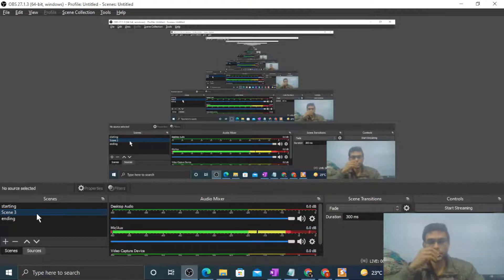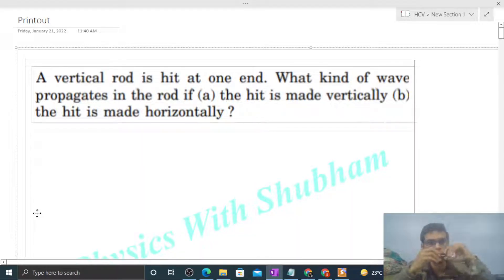Okay, hi everyone. So today let's discuss one interesting problem. A vertical rod is hit at an end. What kind of wave propagates in the rod if the hit is made vertically or the hit is made horizontally?